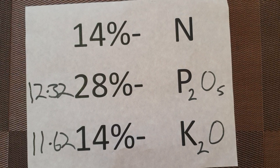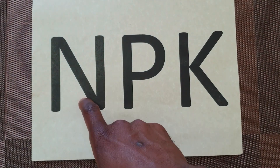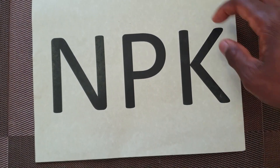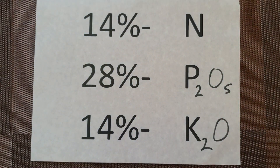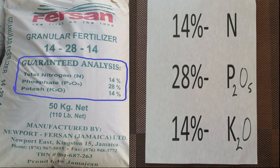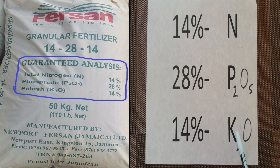The second and the third number does not represent the true percentage of those two nutrients within the fertilizer bag, which is phosphorus and potassium respectively. So of course we are going to be talking about NPK — nitrogen, phosphorus, potassium. When you buy your fertilizer, specifically first-hand fertilizers, you will see something called guaranteed analysis on the bag. What this is saying is 14% nitrogen, 28% P2O5, 14% K2O.